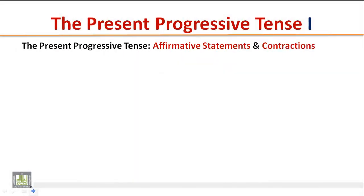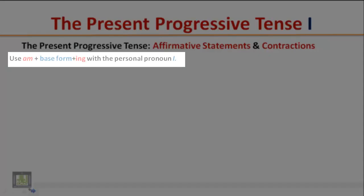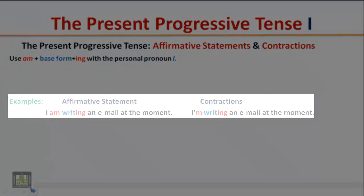The Present Progressive Tense: Affirmative statements and contractions. Use 'am' plus the base form plus '-ing' with the personal pronoun 'I'. Example: 'I am writing an email at the moment.' Contracted form: 'I'm writing an email at the moment.'